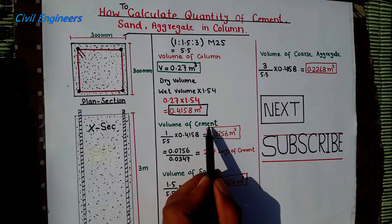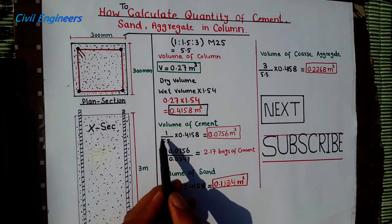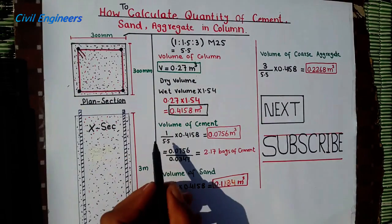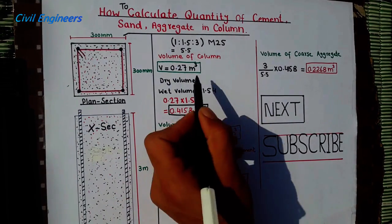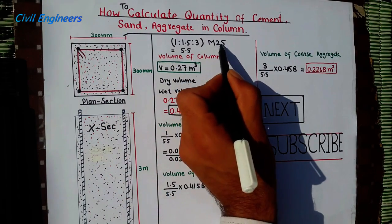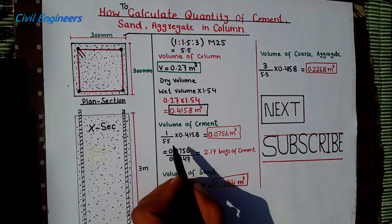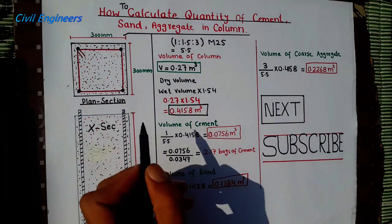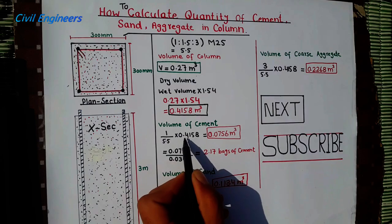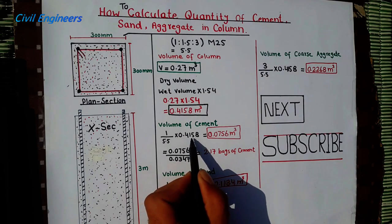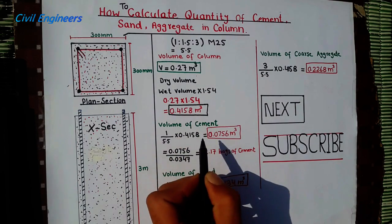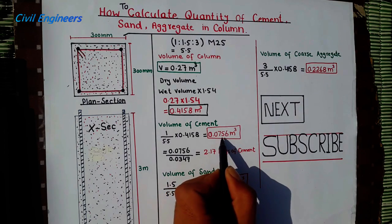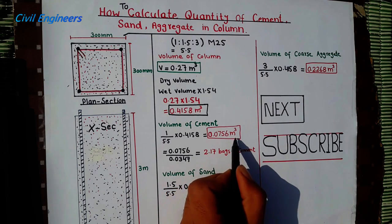Now I want to find out the volume of cement. The cement ratio is 1, and 5.5 is the sum of ratio for M25. Multiply by the dry volume of the column, which is 0.4158. This gives you 0.0756 meter cube as the volume of cement.